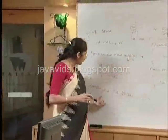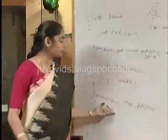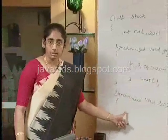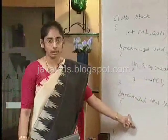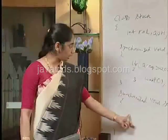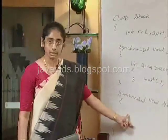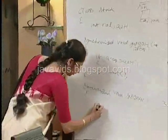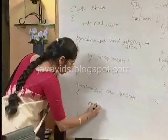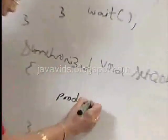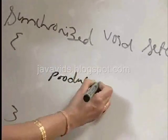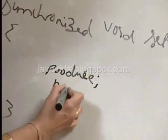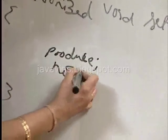Now the producer thread can acquire the lock to call set quantity on hand, produce the quantity on hand required, whatever it is, and then it calls notify.